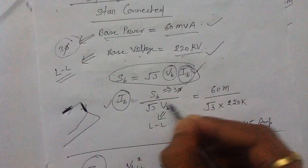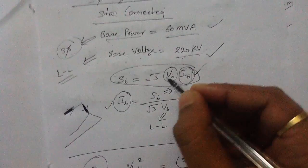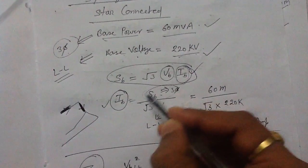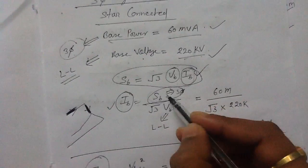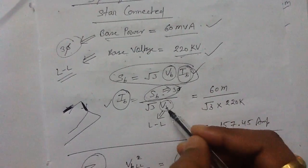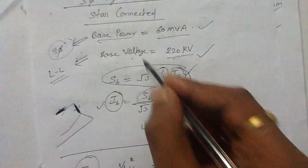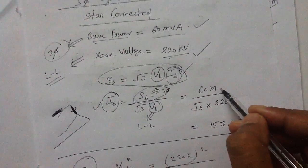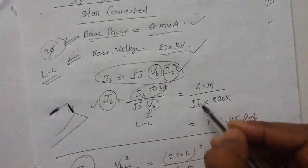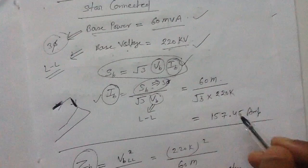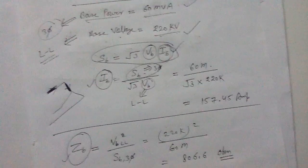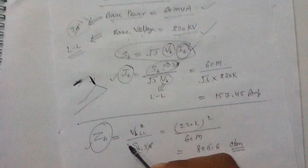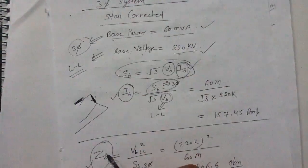The base current will be S_base divided by root 3 times V_B. We can put in the three-phase base power: 60 mega volt-ampere divided by root 3 times 220 kilovolt. You will get 157.45 ampere.